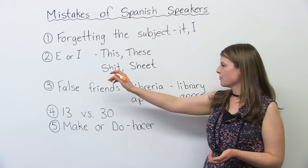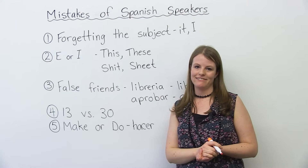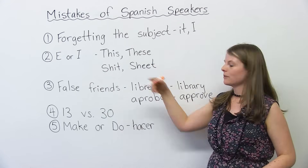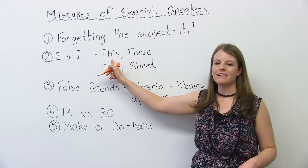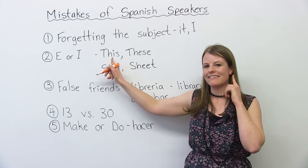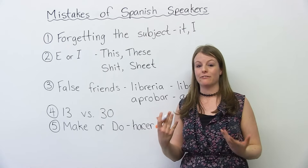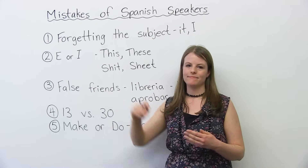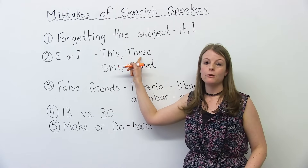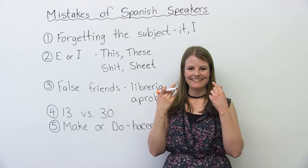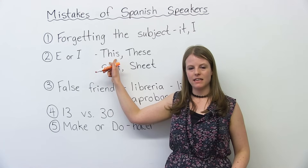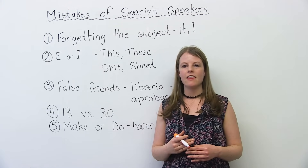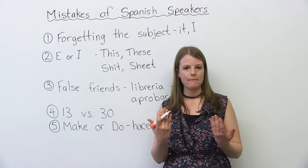Problem number two is the pronunciation of E and the I sound, especially when it comes to 'this' and 'these'. When I hear my Spanish students use 'this', sometimes it sounds like 'these' to me. They don't always pronounce the difference. It's very important to practice the I sound versus the E sound. With E, you smile — 'these'. You see the big smile? With the I, you don't really smile — 'this'. You have a serious face. I want you to practice saying 'this' and 'these'. You see how different my mouth looks?